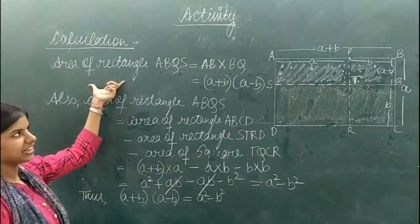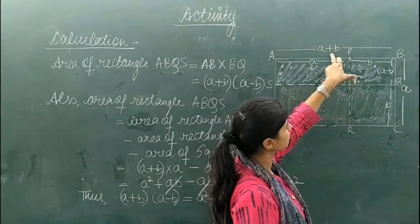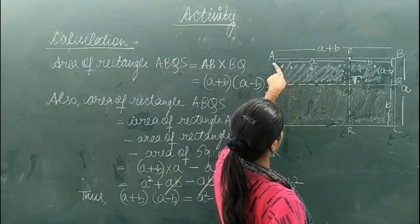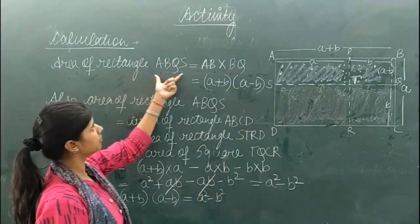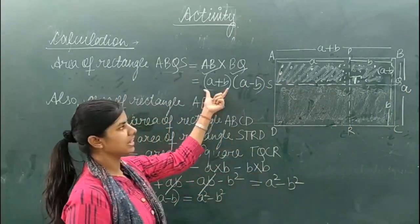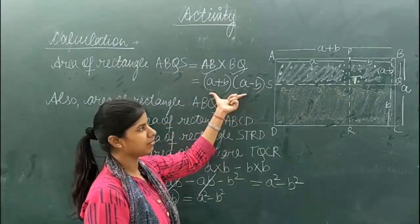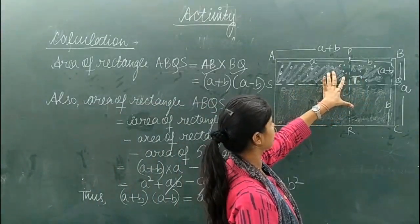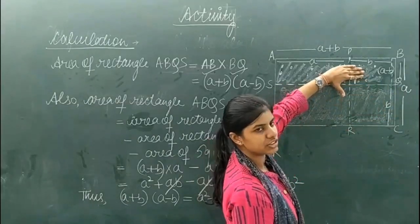Now for the calculation — we have the observation drawn. We need to prove: (A+B)(A-B) = A²-B². First, we find the area of rectangle ABQS. Area of rectangle ABQS equals length multiplied by breadth, where length is A plus B and breadth is A minus B. So area of rectangle ABQS equals (A+B)(A-B).